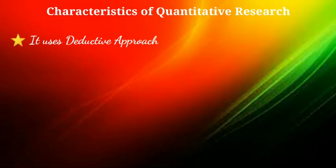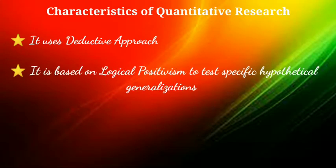This can be done through observation, analysis, description, or explanation of any variable. Now let's discuss the characteristics of quantitative research. It uses a deductive approach, sometimes called a top-down approach, or approach from unknown to known, or specific to general. It is based on the logical positivism paradigm, which utilizes experimental methods and quantitative measures to test specific hypothetical generalizations.